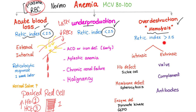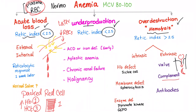Over-destruction or hemolysis has a reticulocyte index more than 2.5, sometimes more than 3. This is divided into intrinsic versus extrinsic causes. Intrinsic means the problem is within the RBC itself — in the hemoglobin, such as sickle cell disease with hemoglobin S; a membrane defect like spherocytosis; or an enzyme deficiency such as pyruvate kinase deficiency or glucose-6-phosphate dehydrogenase deficiency. Extrinsic causes include a stenotic aortic valve, where RBCs get smashed while passing, producing schistocytes — called macroangiopathic hemolytic anemia — or complement problems and antibodies attacking the RBCs.